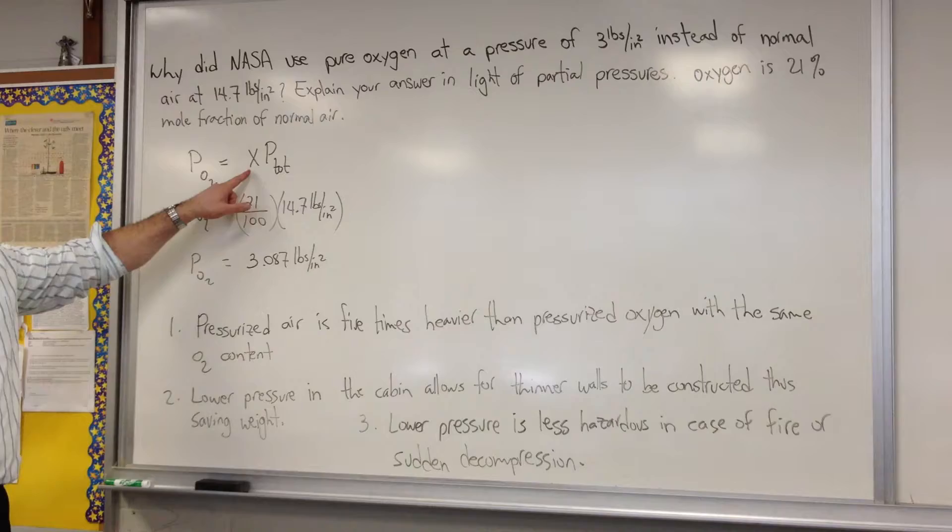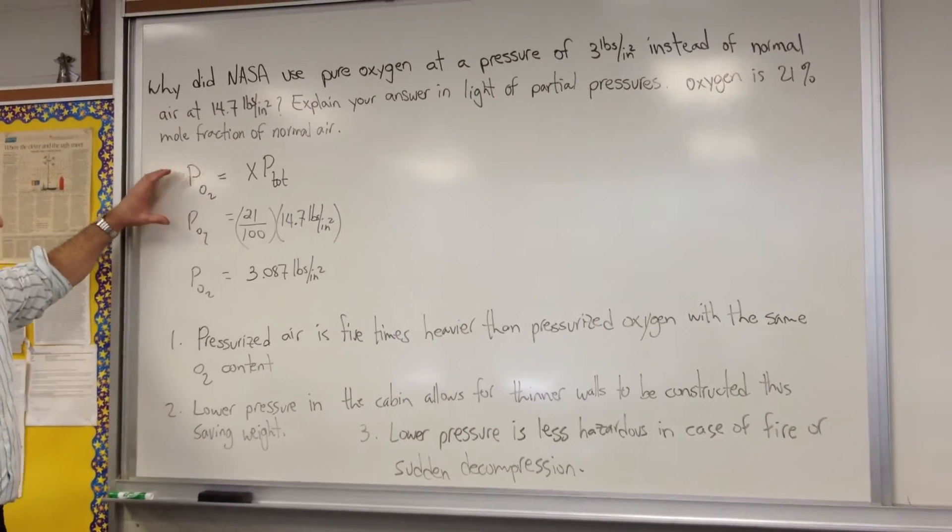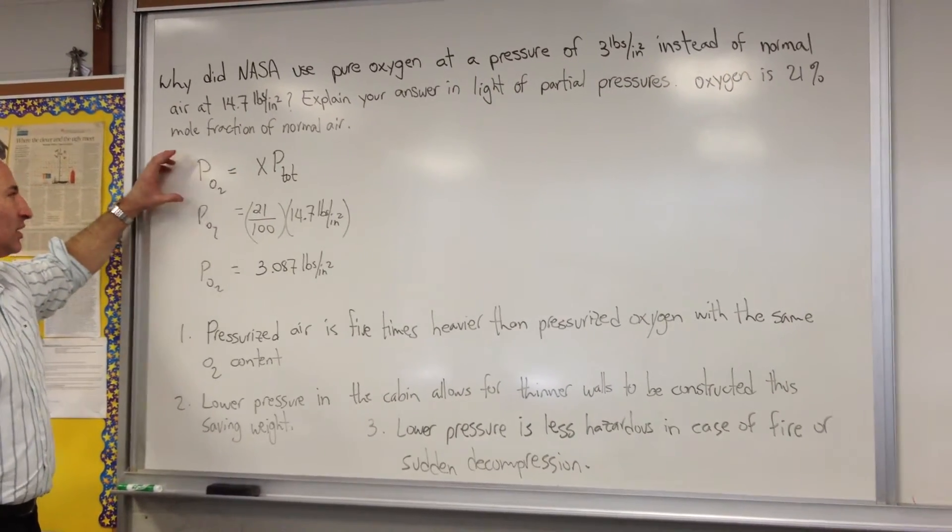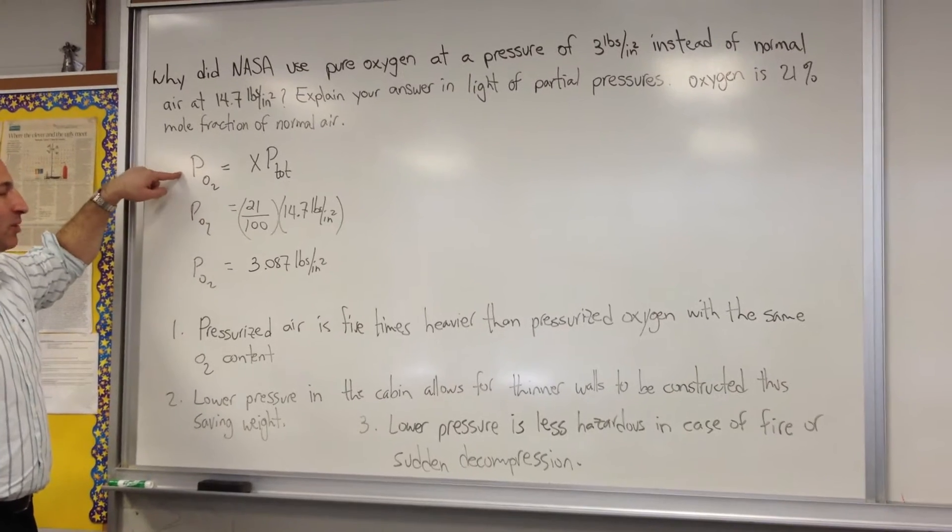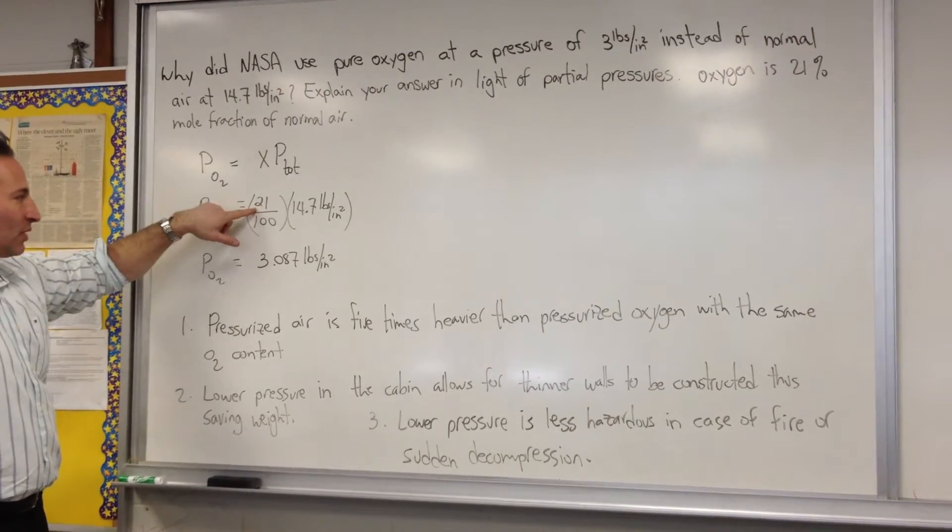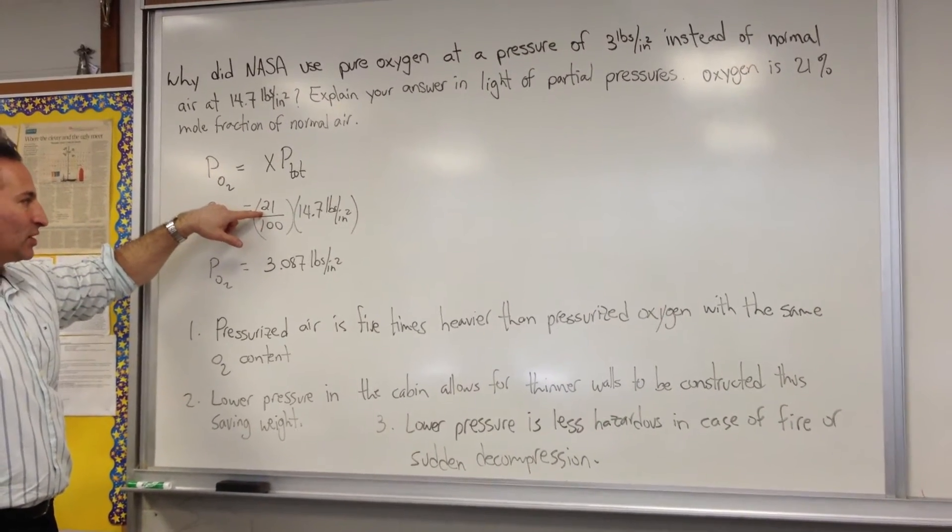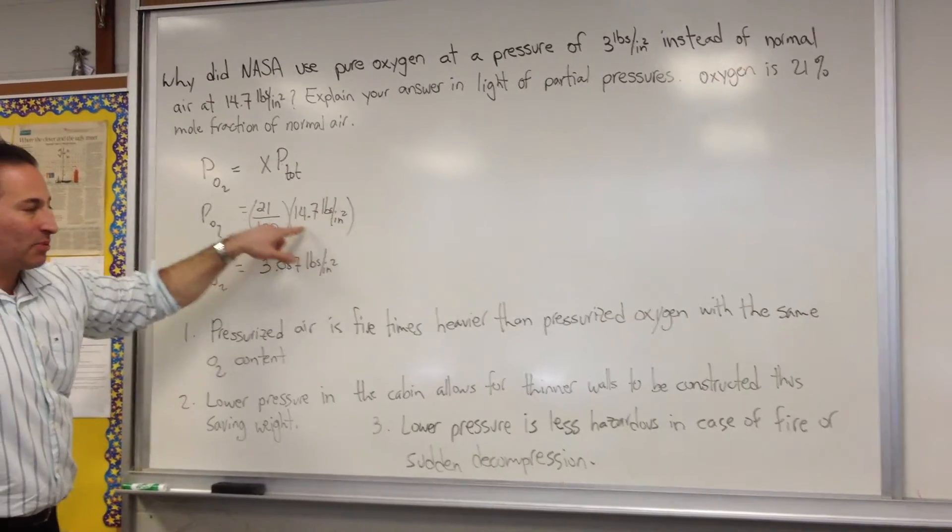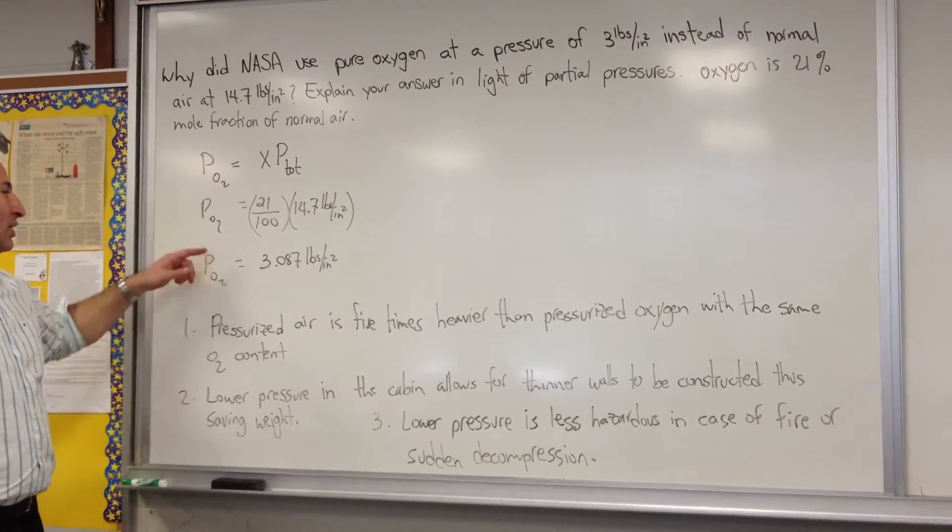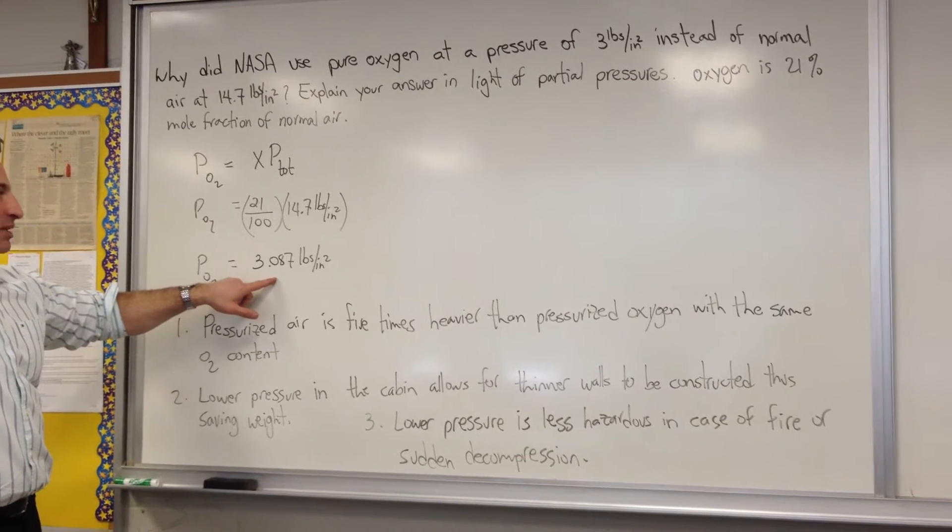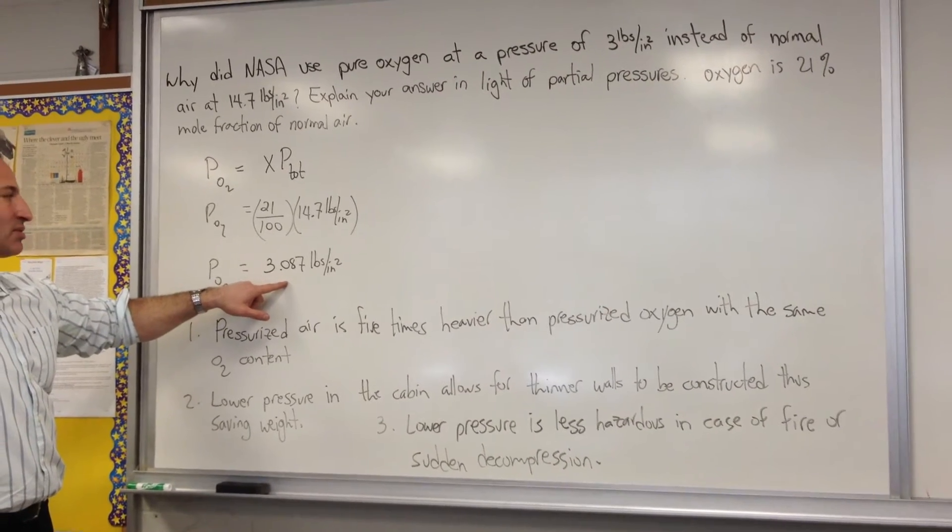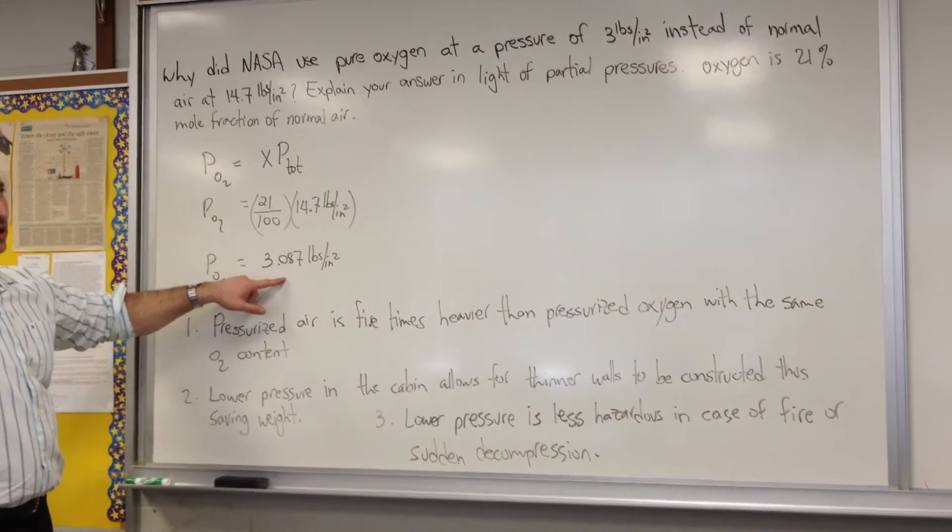Mole fraction here is represented by X. I did a little mathematical treatment to prove that the partial pressure of oxygen with a 21% mole fraction, if the total atmospheric pressure is 14.7 pounds per square inch, the actual pressure of oxygen that we breathe in the atmosphere is 3 pounds per square inch.